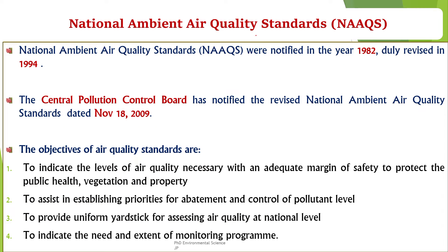National Ambient Air Quality Standards were first notified in 1982 to set benchmarks for air quality to safeguard public health and the environment. The first revision was in 1994, updating the standards to reflect new scientific knowledge and environmental needs. The second revision was in 2009 to further update the standards to incorporate scientific data and international practices.